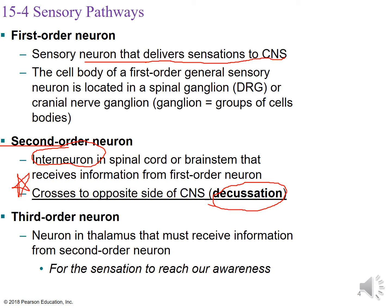The third order neuron is how we become aware of particular sensations. If there is a third order neuron, that means we will receive the conscious awareness — we will have the perception of the sensation.